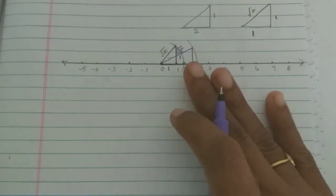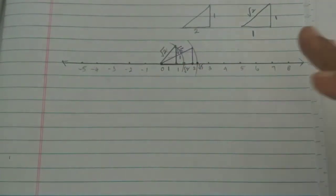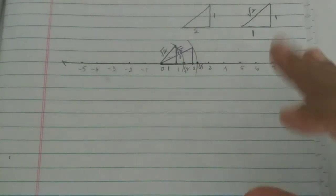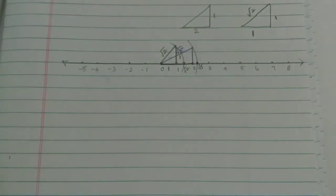So this is the representation of irrational numbers on our number line. We have now shown how to mark irrational numbers on the number line. Thank you.